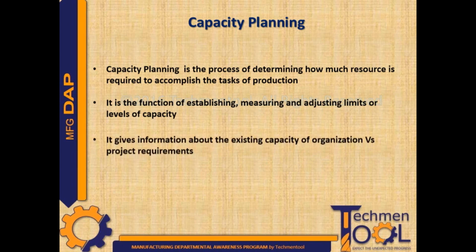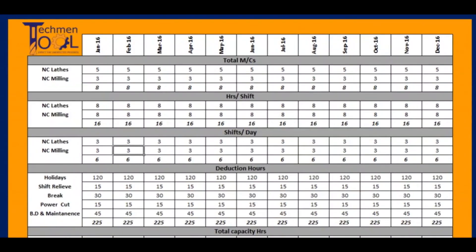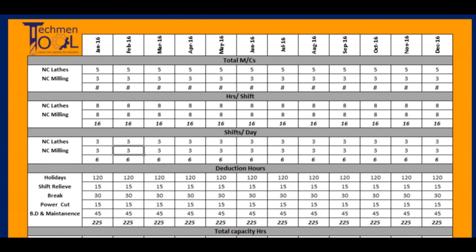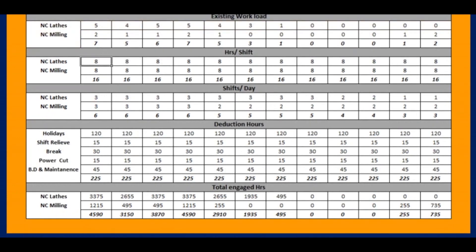It gives information about the existing capacity of the organization versus project requirements. Total capacity of the plant is calculated based on consideration of total machine hours per shift, total machines run, total shifts per day, and deduction of unproductive hours. Unproductive hours include holidays, shift relief, breaks, power cuts, breakdowns, and maintenance.